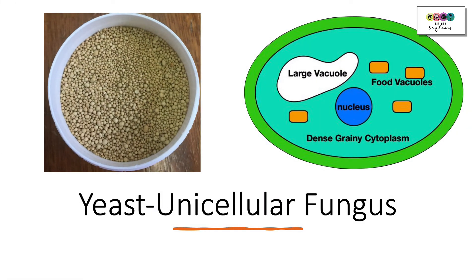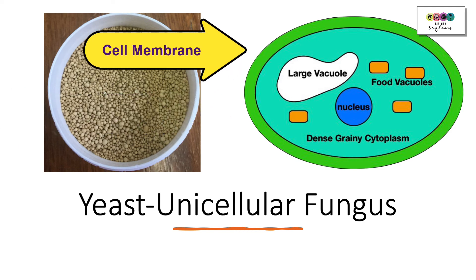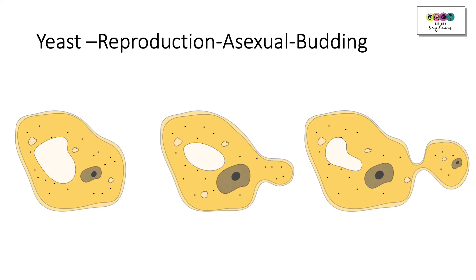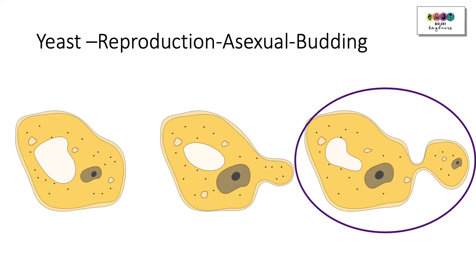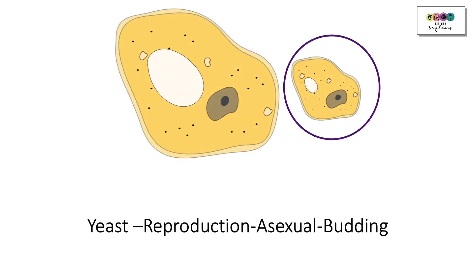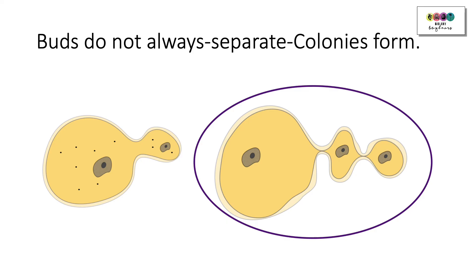The other fungus you must know in detail is yeast — a unicellular fungus without tube-like hyphae. When drawing and labelling a yeast cell, start with the cell wall made of chitin, then the cell membrane, and add labels such as a large vacuole, dense grainy cytoplasm, and nucleus. Yeast reproduces asexually by budding: a bud develops on the side, the nucleus divides by mitosis, and an identical nucleus enters the bud, which separates to form a new individual. Sometimes the bud doesn't detach and undergoes further budding, forming a colony.